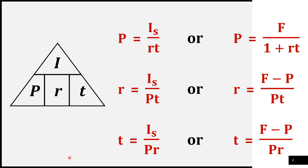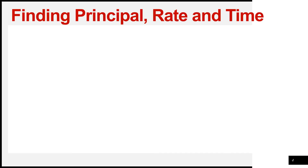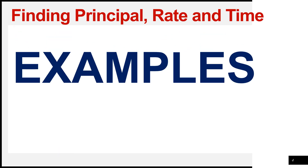And finally, if we are looking for the value of the term, we are going to divide the interest by the product of P and R. Then we have T is equal to the interest divided by PR. Or, T is equal to the future value minus the principal, all over PR. We will now discuss more examples so that we can further master this concept.